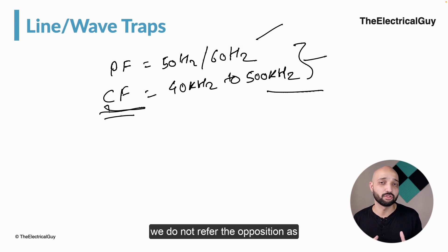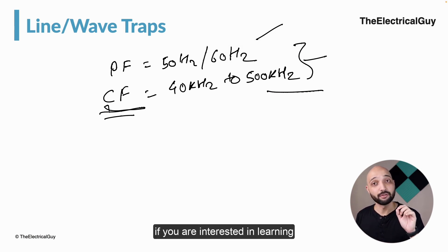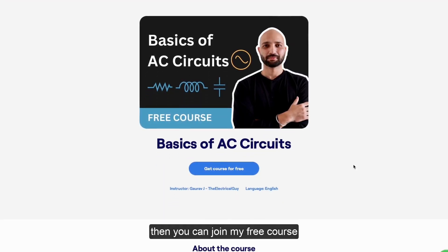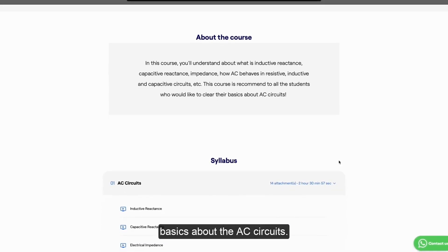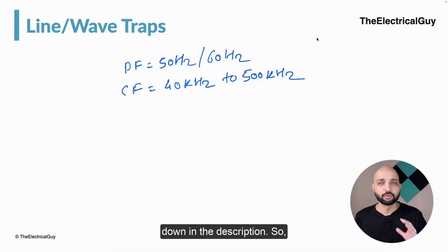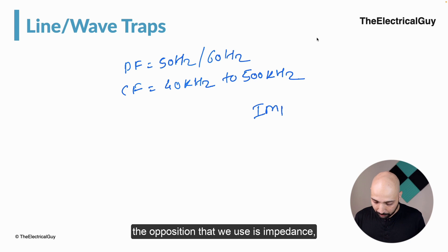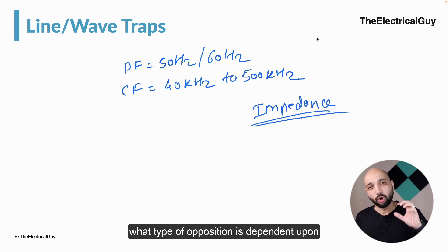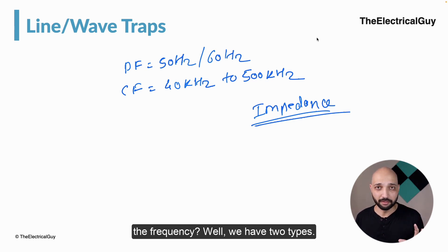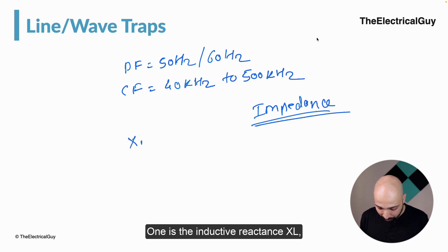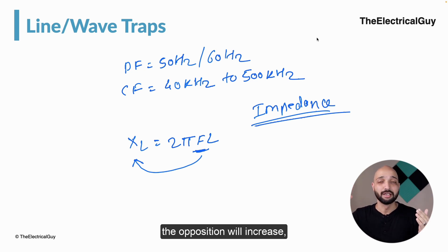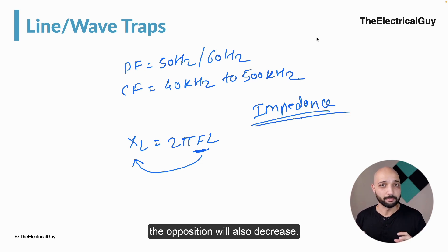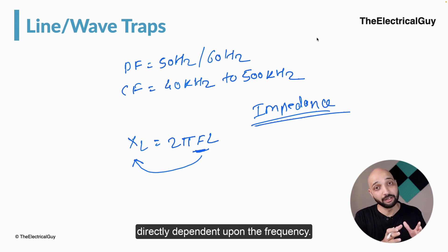In AC circuits, the term for opposition is impedance — we do not refer to it as resistance in AC. There are two types of frequency-dependent opposition. One is inductive reactance XL, given by 2πFL. This is directly proportional to frequency, meaning if frequency increases, inductive reactance increases, and if frequency decreases, the opposition also decreases.